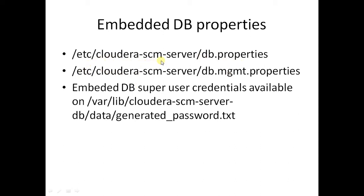The file db.properties inside /etc/cloudera-scm-server contains the main database that Cloudera Manager is using. The file db.mgmt.properties contains the database credentials for the other Cloudera Management Services. These two files contain the username and password for connecting Cloudera Manager to the PostgreSQL DB. If you used an embedded DB, you can get the superuser credentials from /var/lib/cloudera-scm-server/db/data/generated_password.txt. Check these files before proceeding with the backup process.